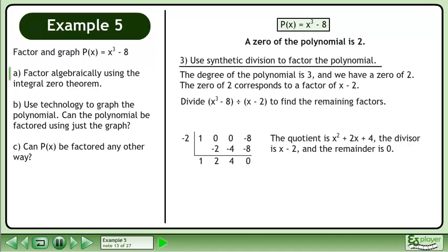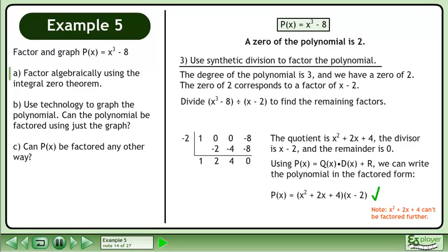The quotient is x² + 2x + 4. The divisor is x - 2, and the remainder is 0. Using P(x) = Q(x)D(x) + R, we can write the polynomial in the factored form: P(x) = (x² + 2x + 4)(x - 2). Note that x² + 2x + 4 can't be factored further.